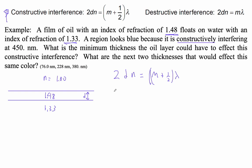Let's plug some numbers in. 2 times D times 1.48 equals M plus 0.5 times 450 nanometers.